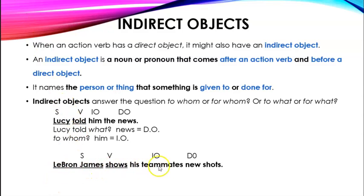LeBron James shows his teammates new shots. And here new is not your direct object. Shots is. LeBron James is your subject. Shows is your verb. LeBron James shows what? Well, he shows the shots. And then to whom? Well, he shows it to his teammates. So teammates is your indirect object there.